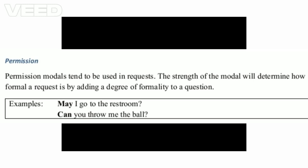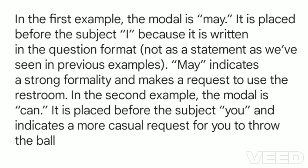Permission modals tend to be used in requests. The strength of the modal determines the degree of formality added to a question. For example: 'May I go to the restroom?' — the modal is may, placed before the subject 'I' in question format, indicating strong formality. In the second example, 'Can you throw me the ball?' — the modal is can, indicating a more casual request.